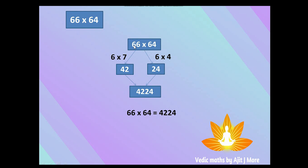If you observe, the principle we are seeing here is applicable there also. For example, if you want to find 65 squared, you are multiplying 65 × 65. The principle is the same — addition of unit place digits: 5 + 5 = 10, and the remaining digits in both numbers are the same. I hope that is clear.